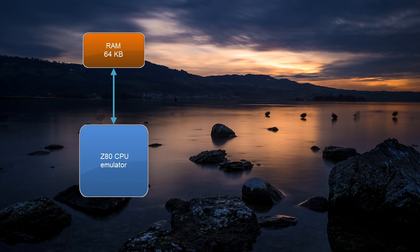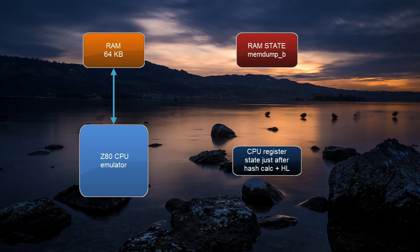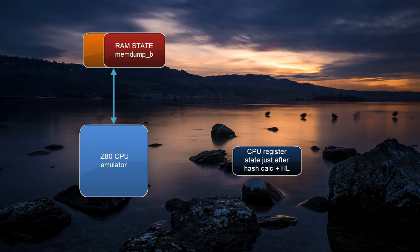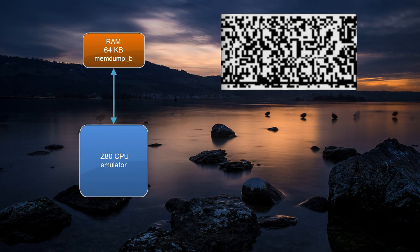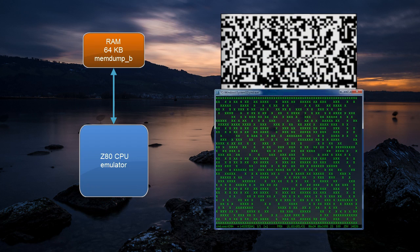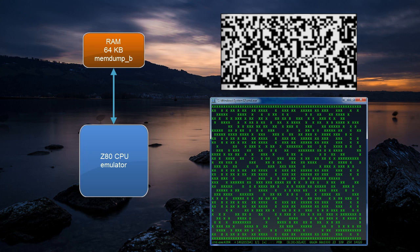Here's what we are going to do. Let's grab a Z80 emulator which we can instrument. Then we can load the most recent memory dump into its memory and initialize its registers by whatever was the state at the breakpoint just after the hash was calculated, but with our desired hash value in the HL register. Then we let it run for a while until the end of the function. At that point, we can extract the output bitmap from the memory and save it as an ASCII image to a file. We can do all of this for every value of a 16-bit hash, giving us about 65,000 images, and the flag will have to be among them.